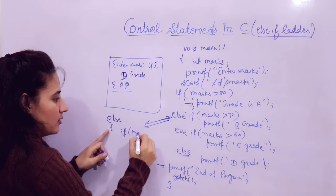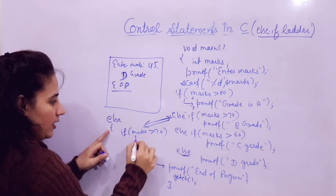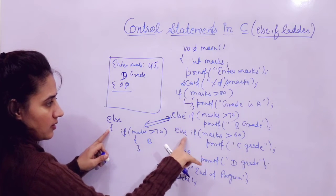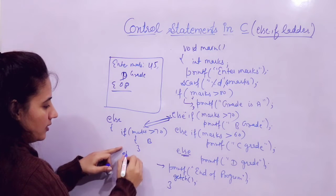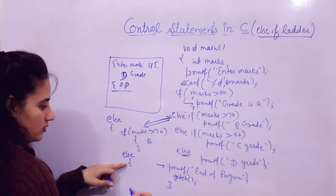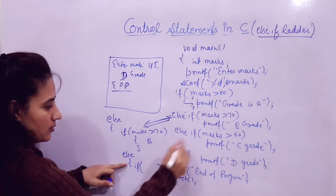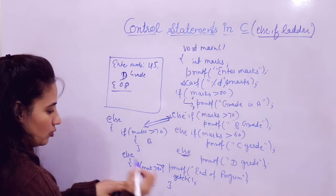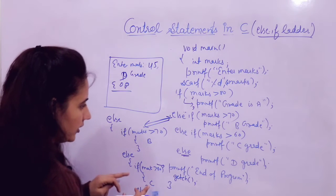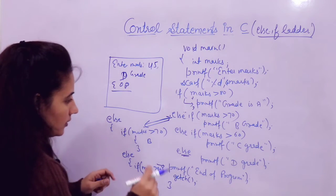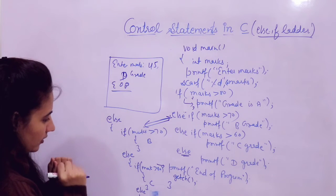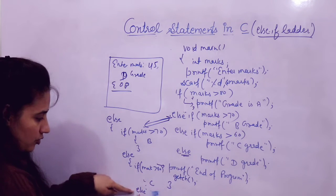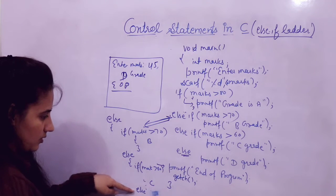After that we have another else, and again you can write if marks greater than 60, with curly braces and C grade. Like this you can write down the structure. Why am I not writing curly braces originally? Because for this if, I'm printing a single statement. So you can remove the curly braces. For this else also, I'm just printing grade D — single statement — so you can remove those curly braces.